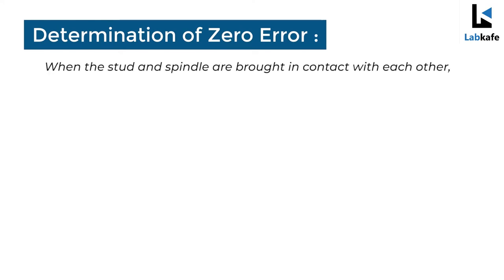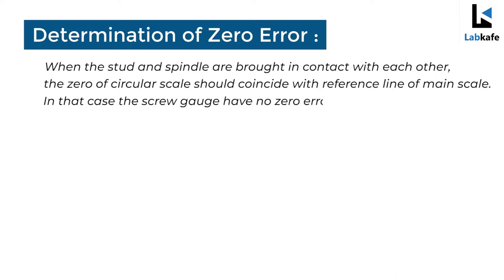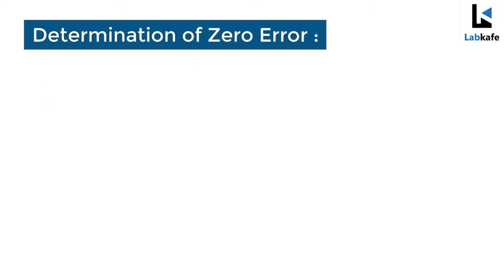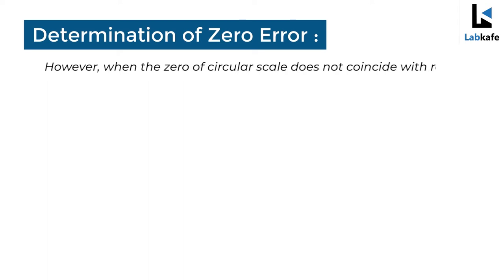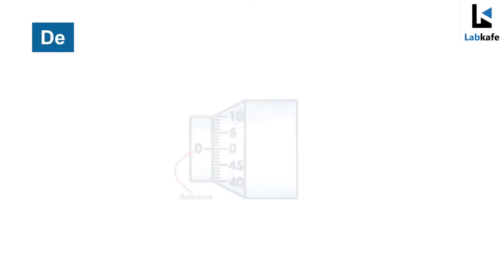Determination of zero error: when the stud and the spindle are brought in contact with each other, the zero of the circular scale should coincide with the reference line of the main scale — in that case the screw gauge has no zero error. However, when the zero of the circular scale does not coincide with the reference line of the main scale, the screw gauge is said to have a zero error.